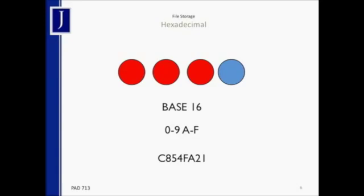Each of the 16 hexadecimal options is given a designation: 0 through 9 and A through F. So if you were to count from lowest to highest in hexadecimal, you would count 0, 1, 2, 3, 4, 5, 6, 7, 8, 9, A, B, C, D, E, and F. Between 0 through 9 and A through F, you can represent each one of those 16 different ways you could arrange the four bits of your data.